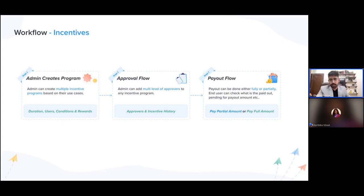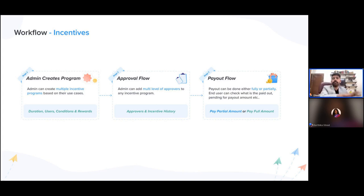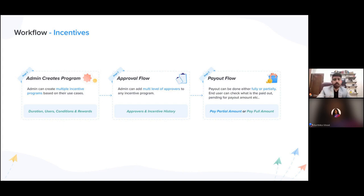Moving toward the product: the idea behind LeadSquared's incentive feature is that an admin with system access can create a program and design the workflow — whatever was calculated on paper can be put into the system so it automatically calculates incentives, visible to both management and the end user. The second flow is an approval flow, where once a person achieves their target they request a payout and management can verify all calculations. The third is the payment payout flow. These three flows are the three pillars of this feature.